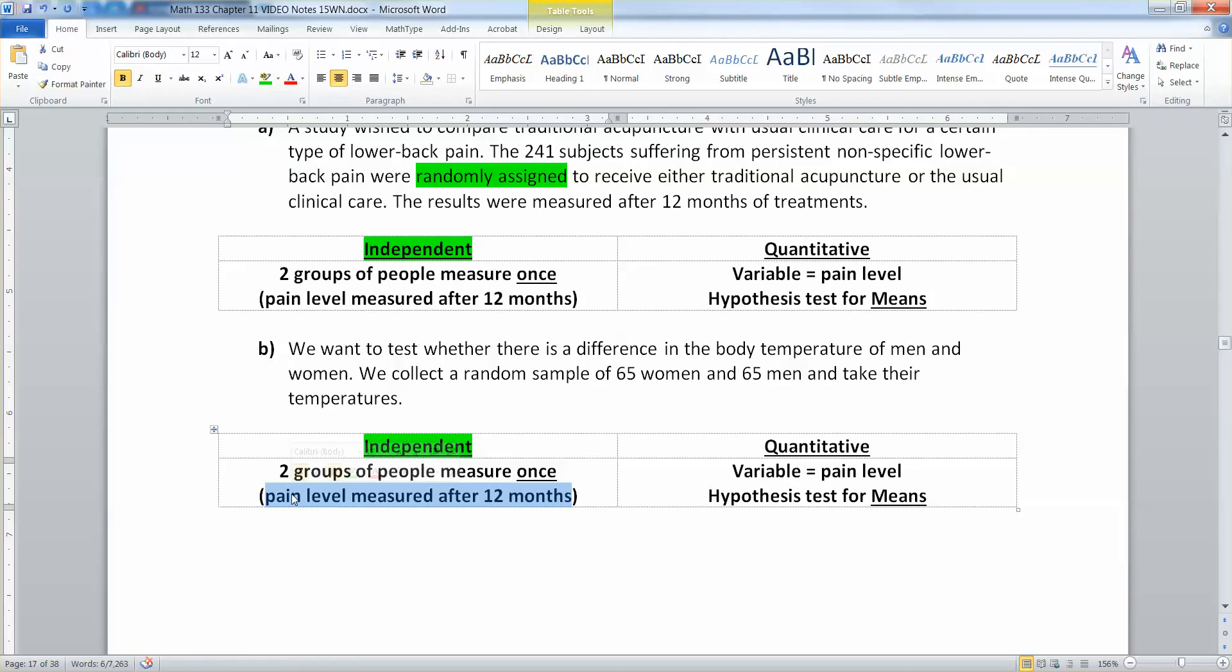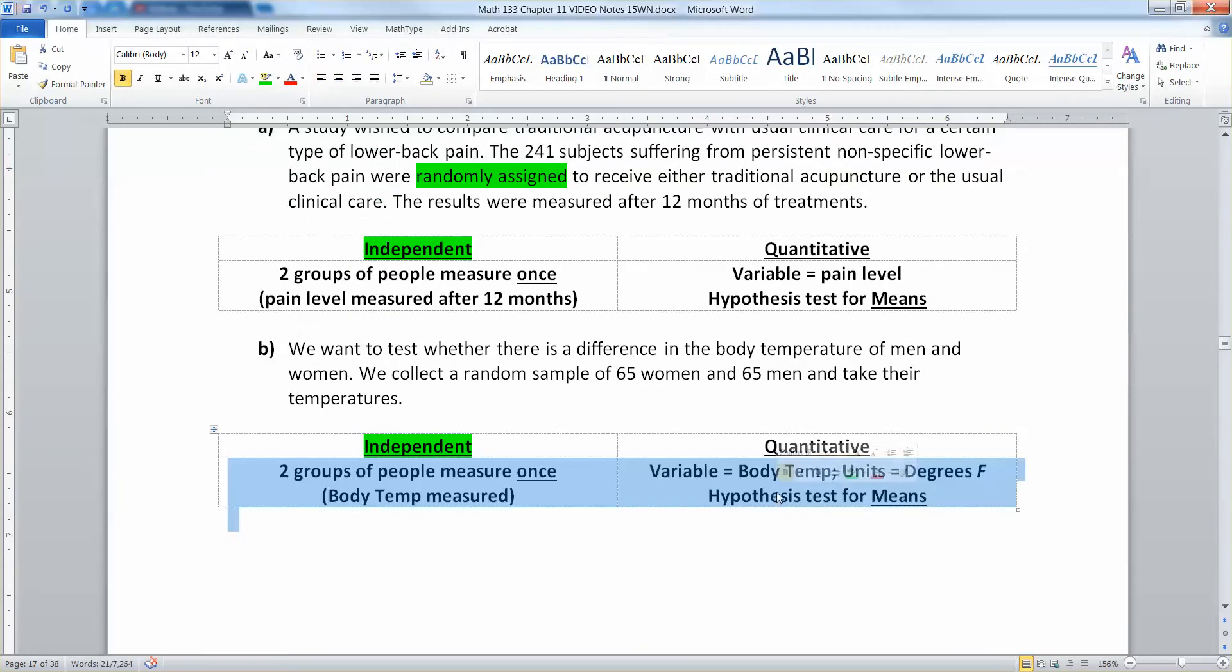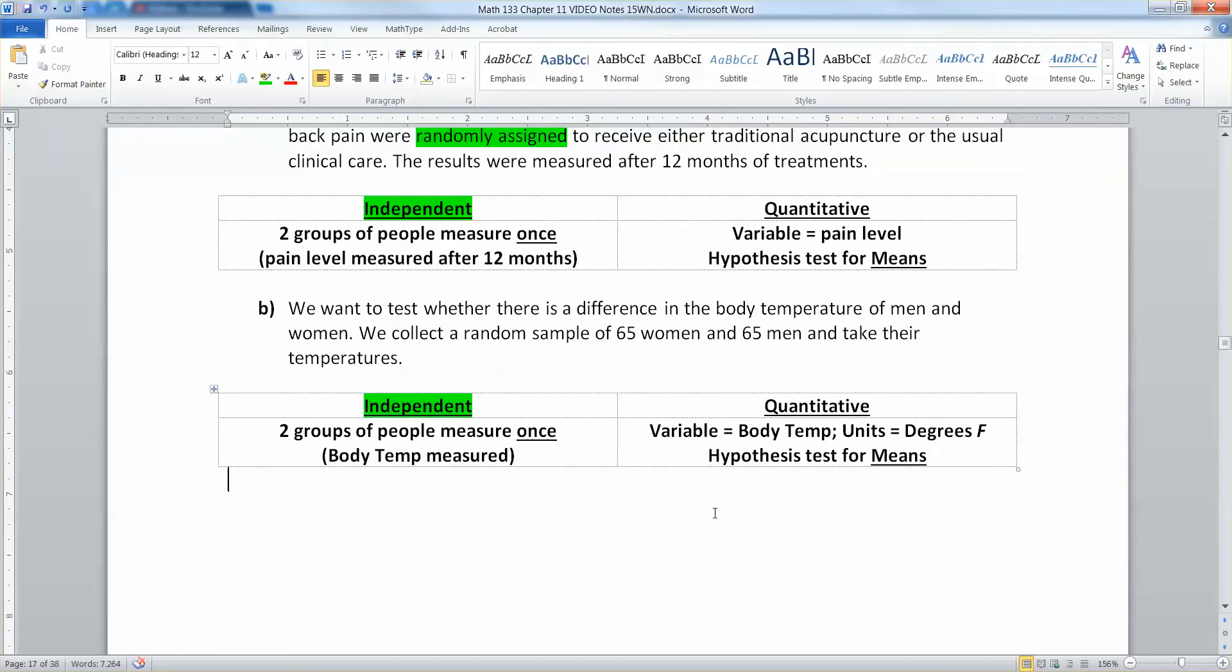So they were measured body temperature, and that is your quantitative variable right there. It's body temperature. The units for this case would probably be degrees Fahrenheit, right? If you're in America, if you're in Britain, it'll be degrees Celsius. That means, again, you're doing a hypothesis test for a mean because that variable is quantitative.